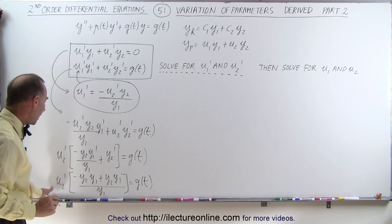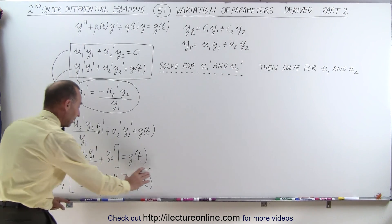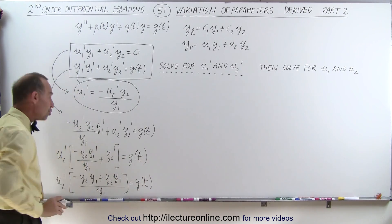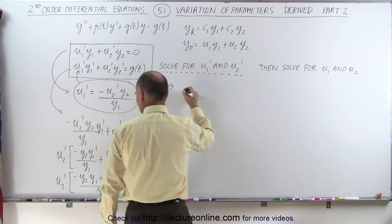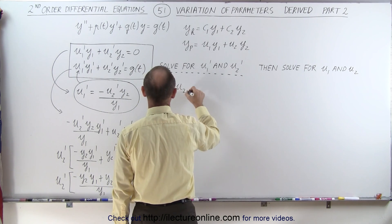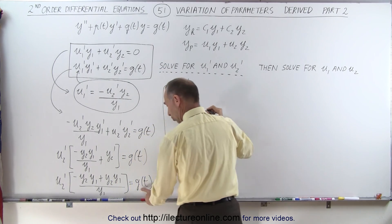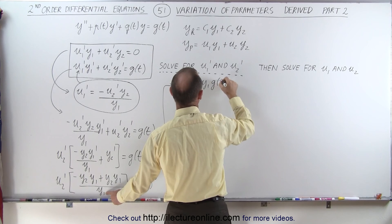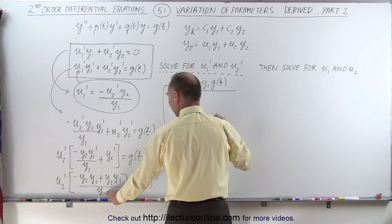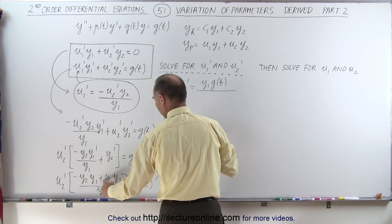Now I can go ahead and multiply g of t by y1' and divide the right side by the numerator here to isolate u2'. So let me do that. So here we have u2' is equal to, and so we get g of t times y1', or y1' times g of t. We'll write the y1' first, divided by, and I'm going to switch these two terms, putting the plus one first.